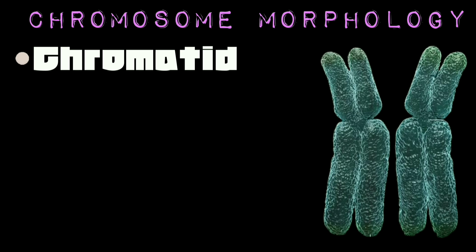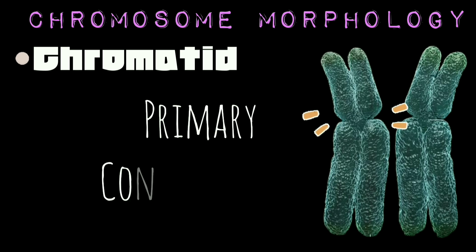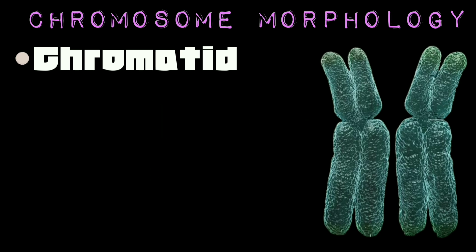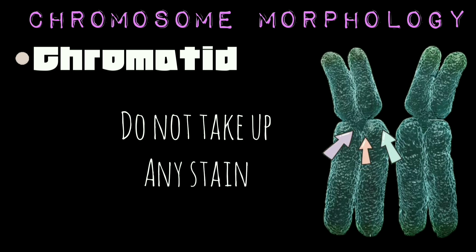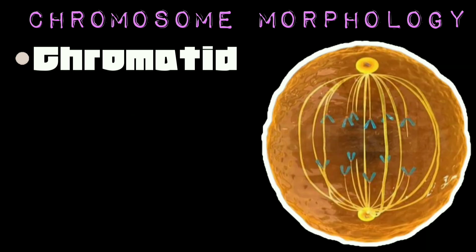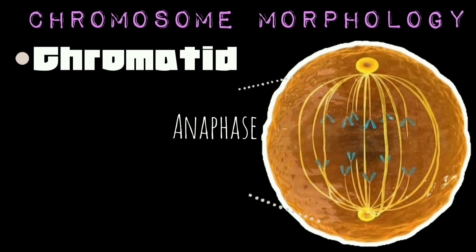Under the light microscope, the centromere generally appears as a constriction — a narrowed region in the chromosome. Hence it is termed the primary constriction. Centromeric regions do not take up any stain and appear as a gap, since the regions adjacent to centromeres are composed of heterochromatin. During cell division, spindle fibers attach to centromeres. As a result, centromeres are the first parts of the chromosome to be seen moving towards the opposite poles during anaphase, so it appears as if chromosome movement is driven by the centromeres.